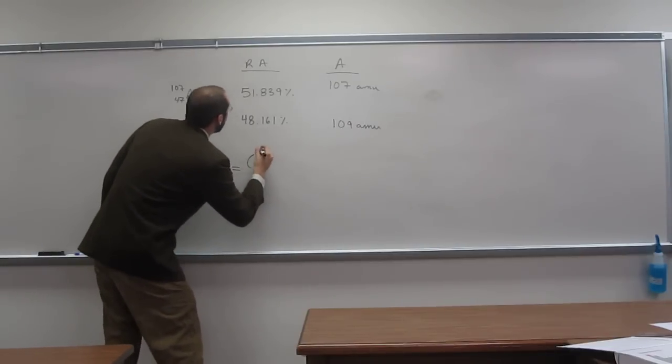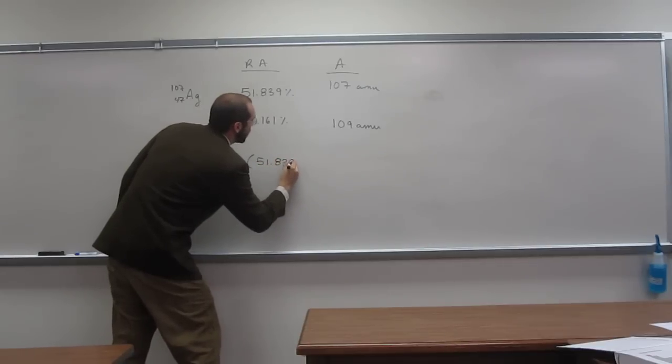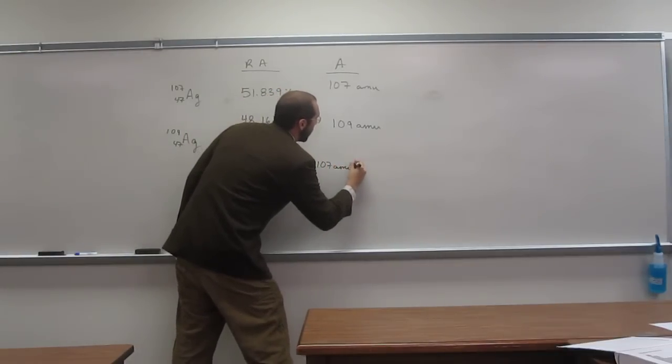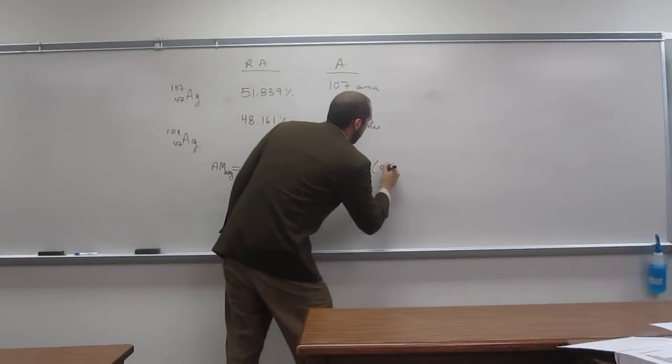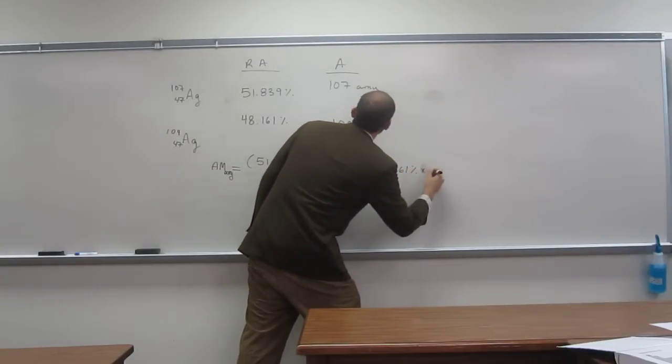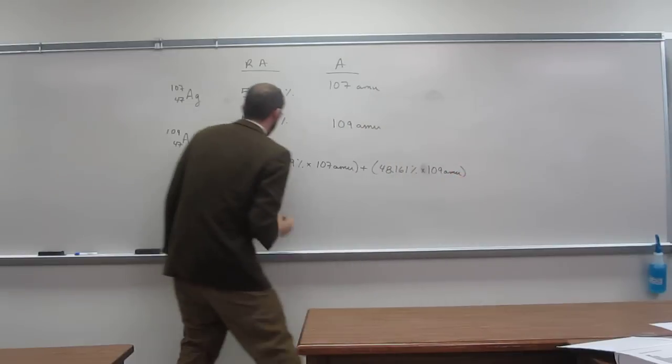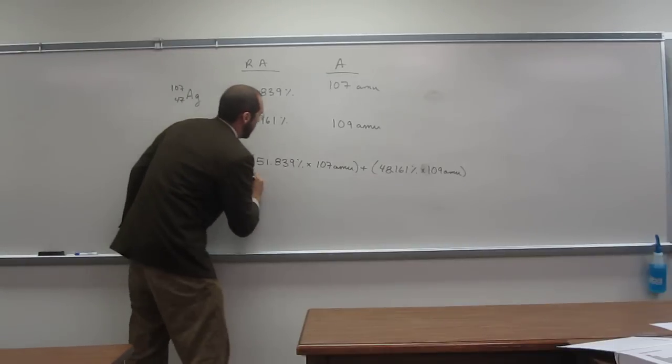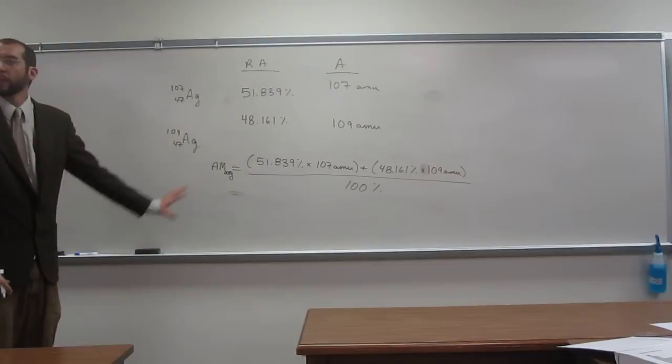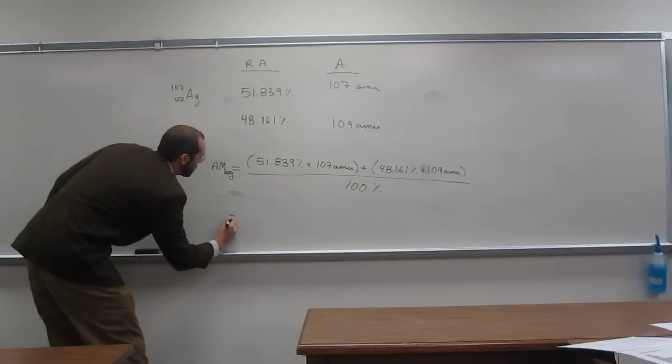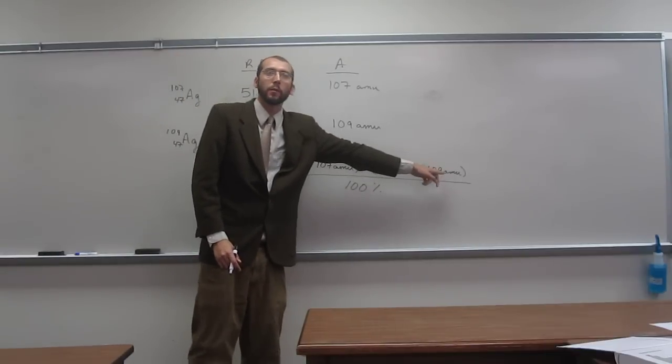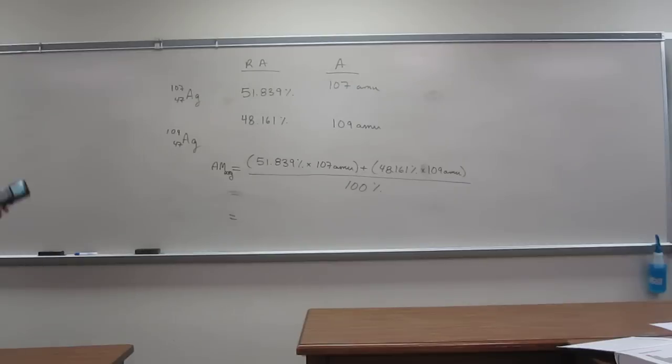So what do I do? I just take 51.839 percent times 107 amu, add that to 48.161 percent times 109 amu, and then divide that by 100 percent. Is everybody cool with that? So again, it's the abundance of the isotope times the mass of the isotope plus the abundance of the isotope times the mass of the isotope all divided by 100 percent.